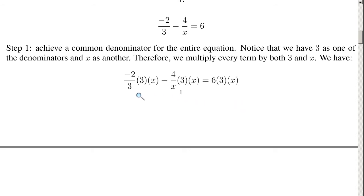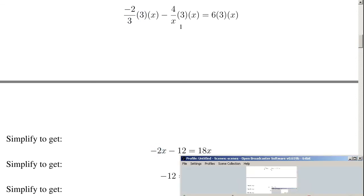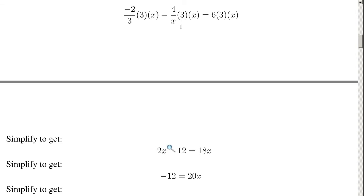From here, we can cross off the 3 in the numerator and 3 in the denominator — those cancel. There's an x in the numerator and x in the denominator — those cancel. With these 3s gone, we have negative 2x. The x's cancel, so we have negative 4 times 3, which is negative 12, equals 6 times 3x, which is 18x.